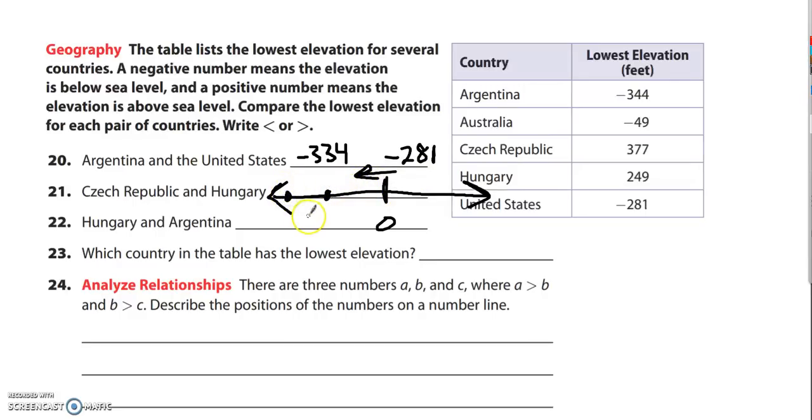Remember, the numbers to the right are greater. So the value of negative 281 is actually greater, even though it's a big old negative, it's greater than negative 334. So the symbol is this way and the sentence is read negative 334 is less than negative 281.